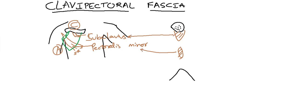So here is the Clavipectoral Fascia. The simplest depiction is enclosing the subclavius, rejoining and splitting again to enclose the pectoralis minor, then extending to the axilla.